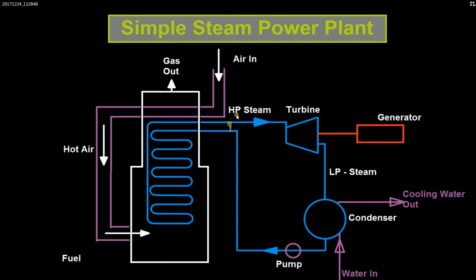How do you generate high pressure steam? You can generate steam by heating water above 100 degrees Celsius to convert it to steam, and then heat it further to generate high pressure, high temperature steam. Then in the turbine, you use the power of the steam to rotate the turbine and generate electricity. That is what usually happens in a steam power plant.